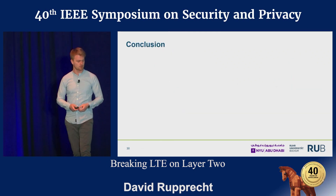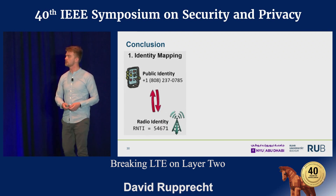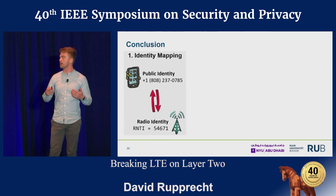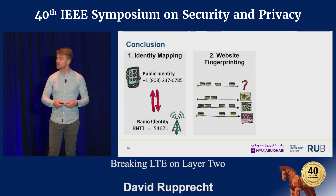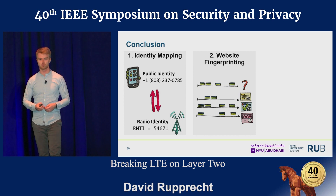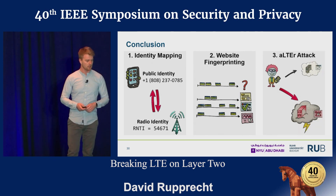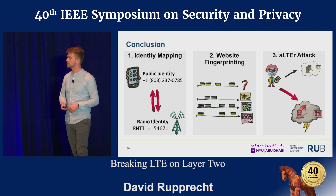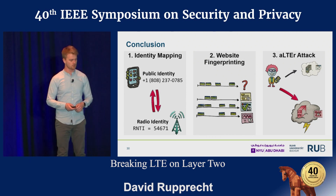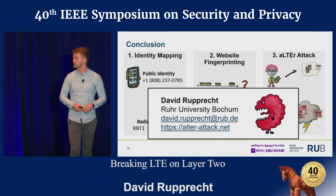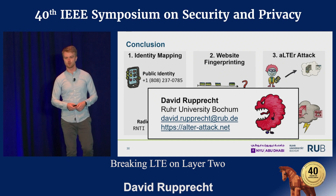In conclusion: I've shown an identity mapping attack where we can match the public identity to the radio identity; website fingerprinting was possible because of unencrypted metadata in LTE; and the alter attack allows redirection of a user to a malicious website. I'm David Ruprecht from Ruhr University Bochum and I'm happy to answer questions.